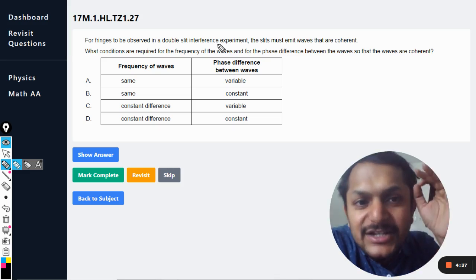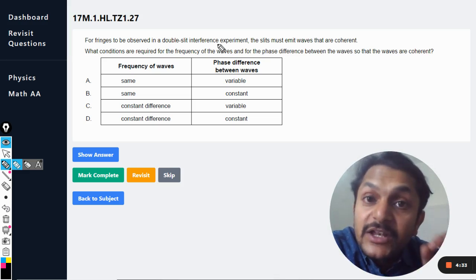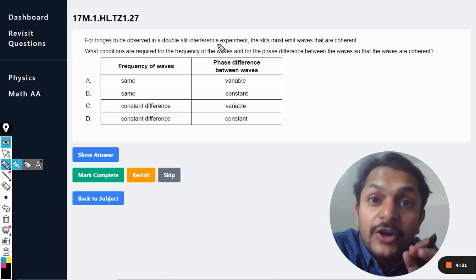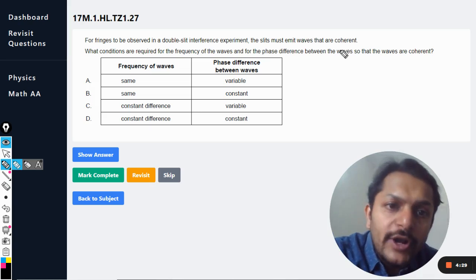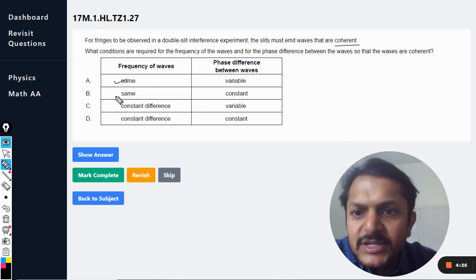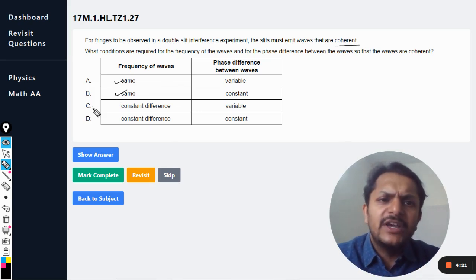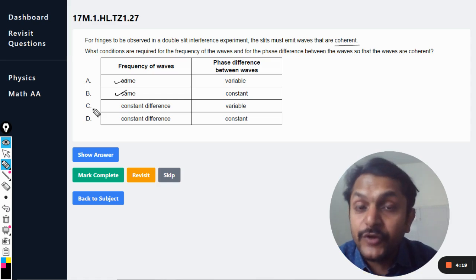This is basically the condition for interference to take place. Interference will not take place if the two waves are not coherent. What do we mean by coherent? Number one: the frequency should be the same. Frequency of both waves should be the same, or we can say that light should be coming from one single source.